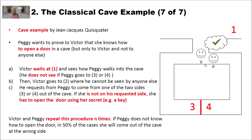Then Peggy comes out of the requested side and Victor can see that she came out from the correct side. They will repeat this procedure n times. If Peggy does not know how to open the door, in 50% of the cases she will come out at the wrong side. For example, if she was at side three and does not have the key, and Victor says please come out from side four, she has to come out at side three instead. To verify she really has the key, they repeat this procedure n times to reduce the probability that Peggy randomly chose the right side.